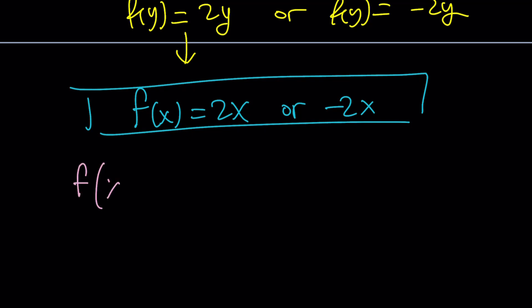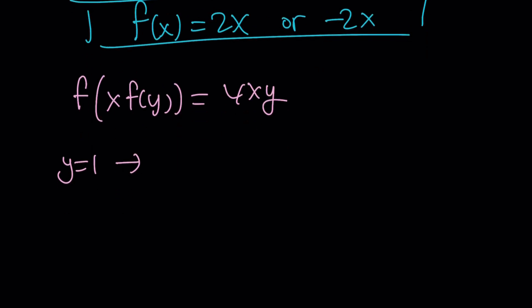f(xf(y)) equals 4xy. This time I want to replace y with 1. I think we tried x with 1, right? So now if y is equal to 1 we get f(x) times f(1) equals 4x times 1 which is 4x. And here f(1) is going to be, let's see if we can replace f(1) with c. This is going to give us f(cx) equals 4x.